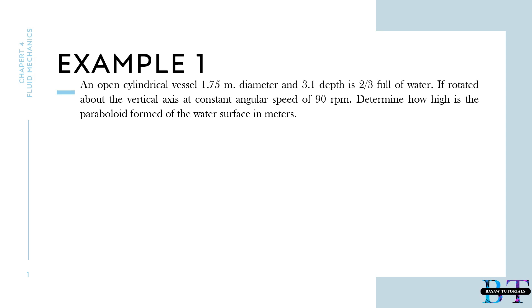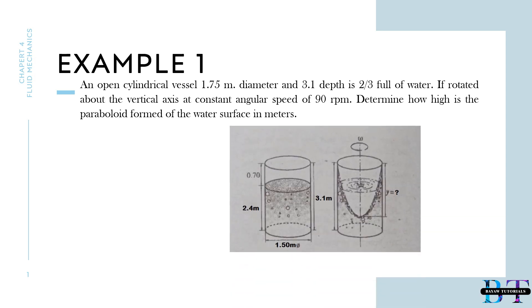Hi and good day everyone, let's solve another problem in fluid mechanics, Chapter 4 Rotation, Example Number 1. An open cylindrical vessel 1.75 meter diameter and 3.1 depth is two-thirds full of water. If rotated about the vertical axis at the speed of 90 rpm, determine how high is the paraboloid form of the water surface in meters.